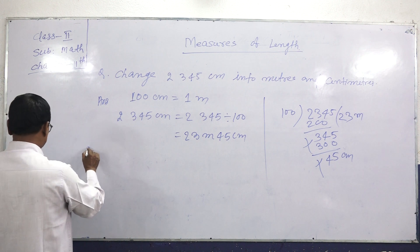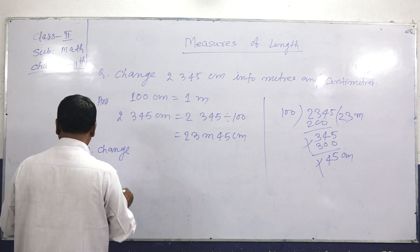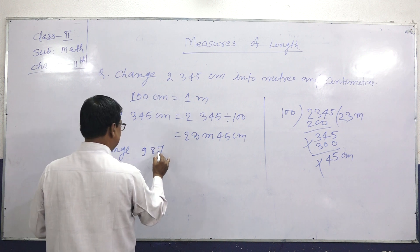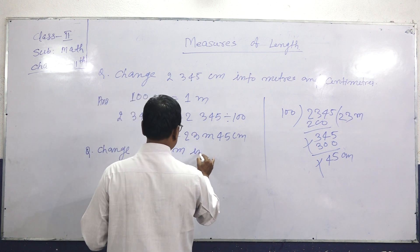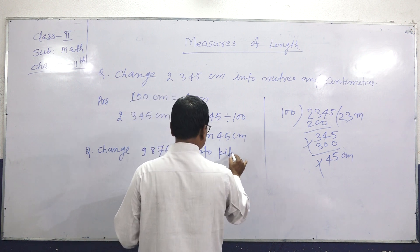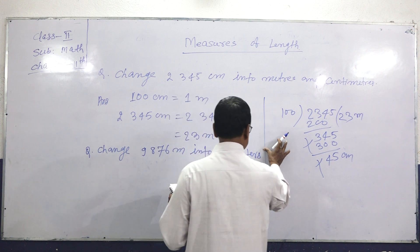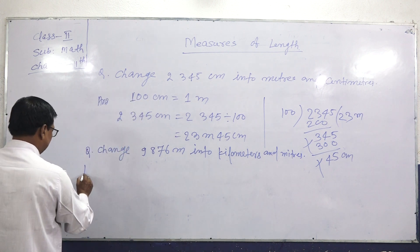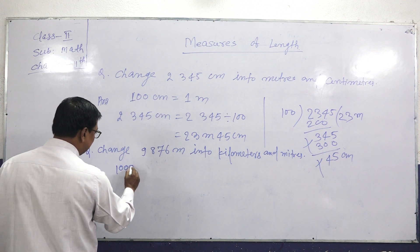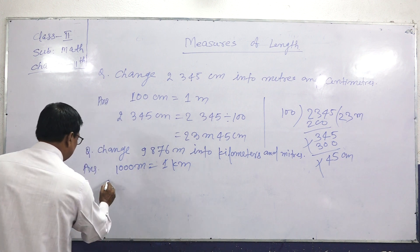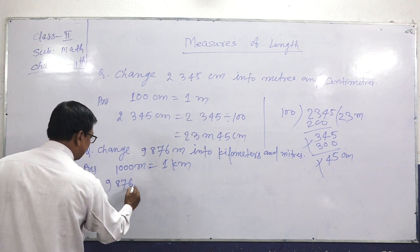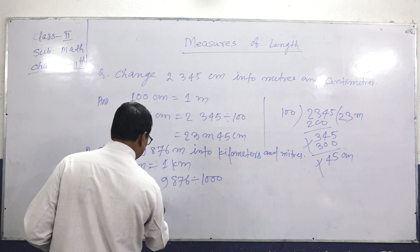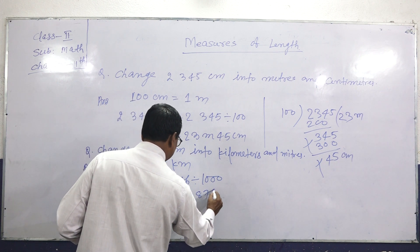Next. Change 9,876 meters into kilometers. We know that 1,000 meters equals 1 kilometer. 9,876 meters divided by 1,000 equals 9.876 kilometers.